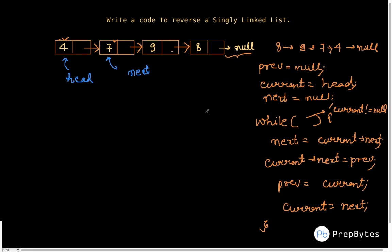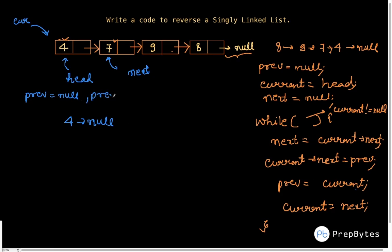Let's trace through it. Initially prev is null, current is pointing to 4 (head), and next is null. We enter the loop since current is not null. We do next equal to current's next, so next starts pointing to 7. Then current's next equals prev, so 4's next becomes null. We update prev to current so prev becomes 4, then current becomes 7.